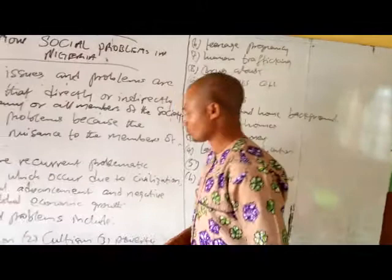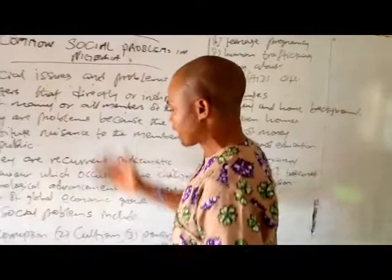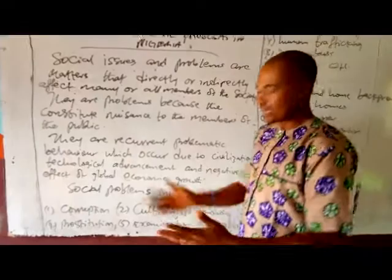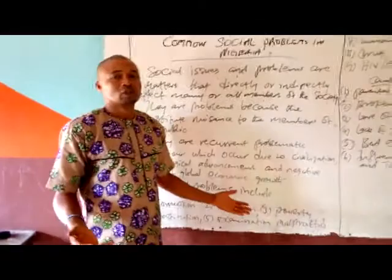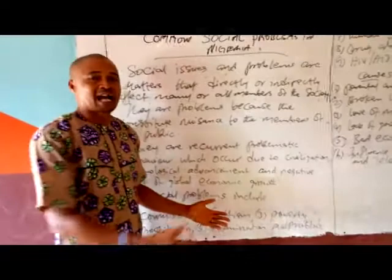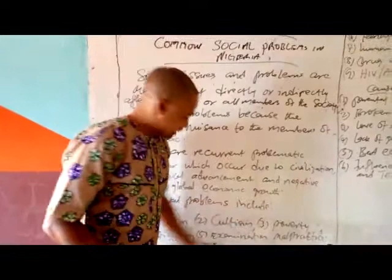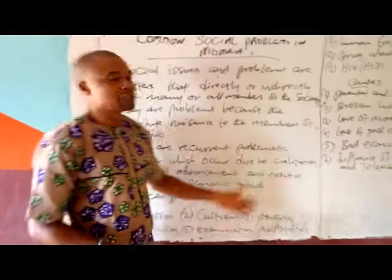Let's look at some of the social problems we have in Nigeria today. Among them we have: number one is corruption — we all know that corruption is everywhere in our society today. Number two, courtesy. Number three, we have poverty, prostitution, examination malpractices, and teenage pregnancy.